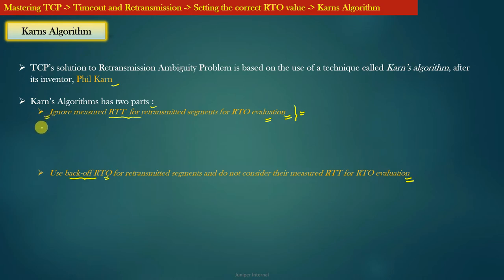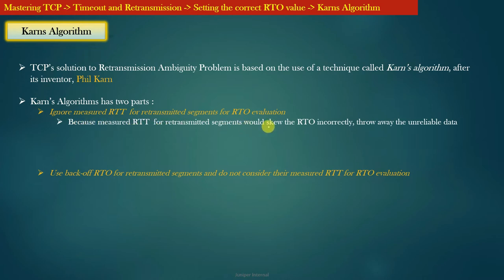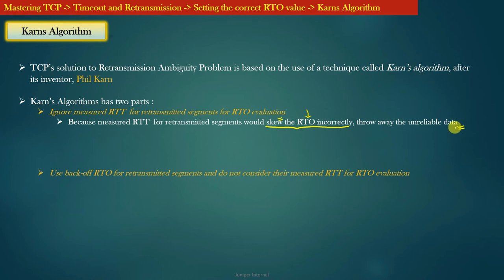To elaborate on the first part of Kahn's algorithm: the measured RTT for retransmitted segments would skew the RTO incorrectly, because TCP doesn't know which RTT to choose in order to evaluate RTO correctly. So the first point of Kahn's algorithm simply says: throw away any unreliable data and do not consider it for RTO evaluation. This completely solves the problem of retransmission ambiguity.